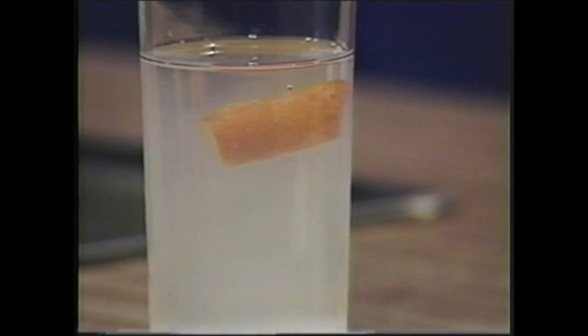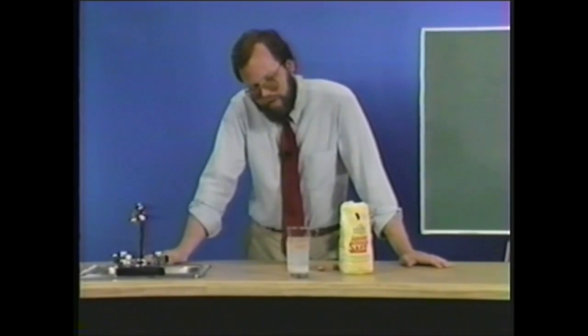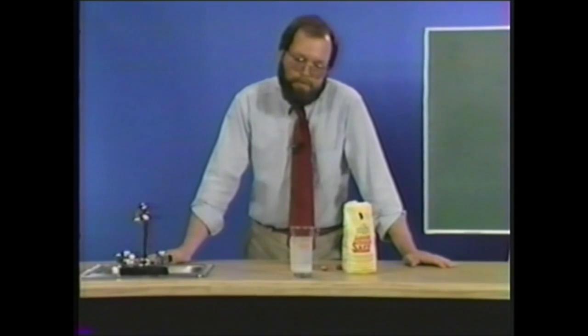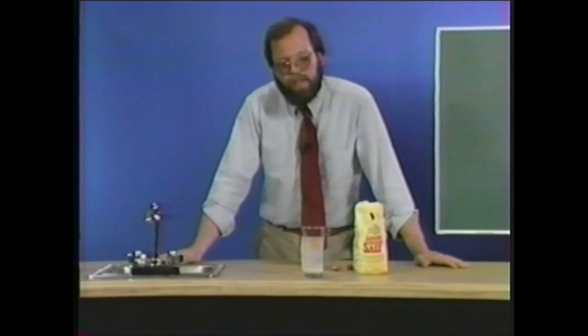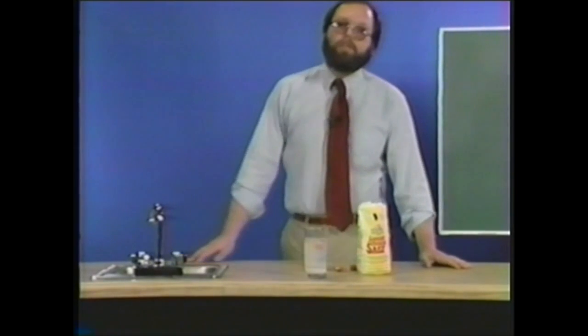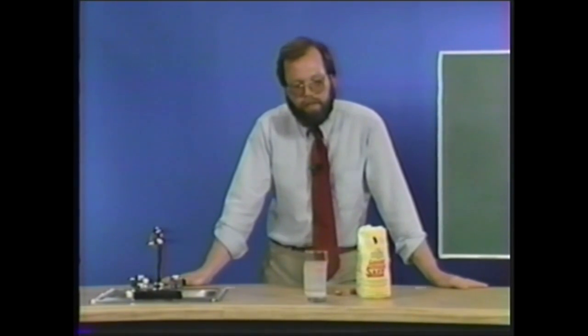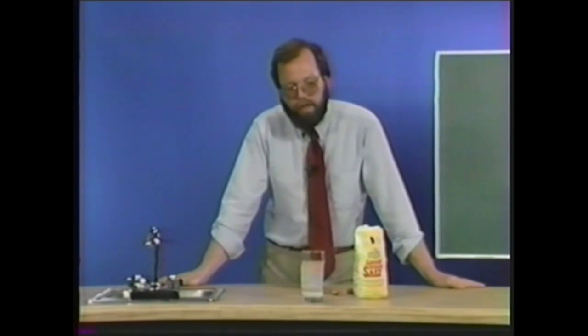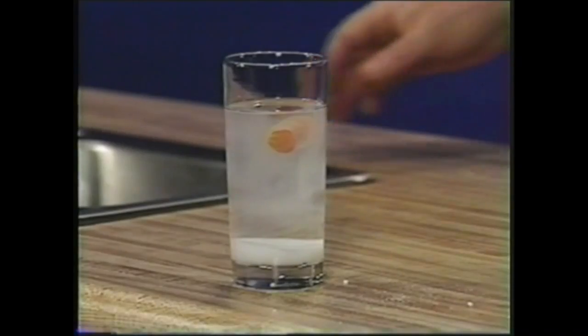Let's take this experimental result and try to answer an observation that maybe some of you have made. Did you know that it's easier to float in the ocean than it is in fresh water? You know that the ocean contains salt dissolved in it. This dissolved salt increases the density of water — salt water is more dense than fresh water. So just like the piece of carrot, you're going to float more easily in salt water.